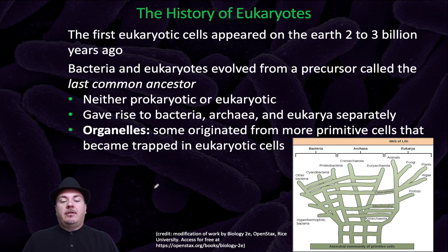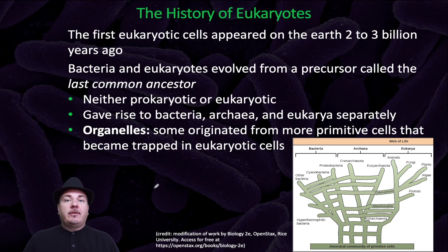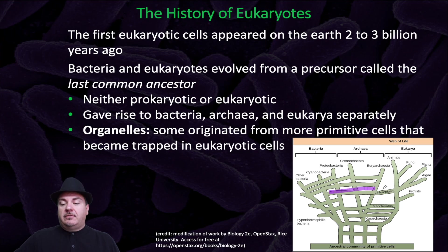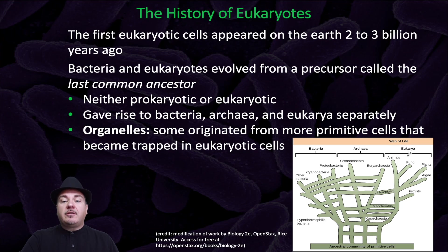Some eukaryotic organelles originated from more primitive cells that became trapped inside eukaryotic cells. For example, eukaryotic cells have a mitochondria, and a lot of eukaryotic cells have chloroplasts. Those two organelles were originally a different living organism, like a prokaryotic cell. This means that genes are moving horizontally between different species — from bacteria to eukaryotes for the mitochondria and the chloroplasts — through something called the theory of endosymbiosis.